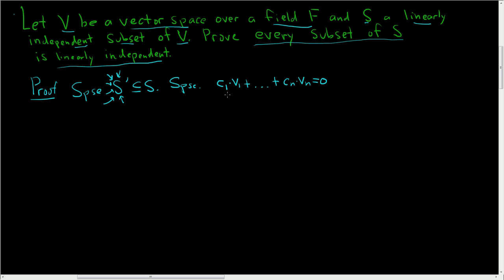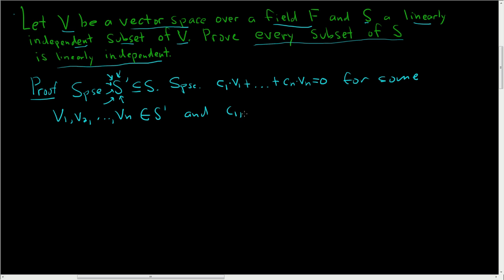We have to show that all of the Cᵢ's are zero. We should say something about these V's — for some V₁, V₂, ..., Vₙ in S prime, and C₁, ..., Cₙ in F.